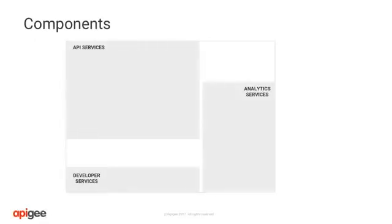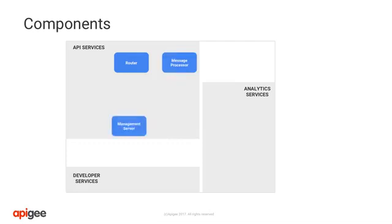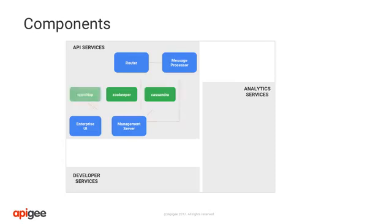Each service has a mixture of Apigee stack and open source components that talk to each other performing a specific function. Within the API services, we have the router that handles all incoming API traffic and dispatches it to the message processor. Message processor executes all the policies for a given specific organization and environment. Management server provides APIs for all configurations and management tasks. Enterprise UI offers an extended capability. Cassandra stores application configurations, API keys, and OAuth tokens. Zookeeper contains service configuration data. OpenLDAP contains the organization users and their roles.